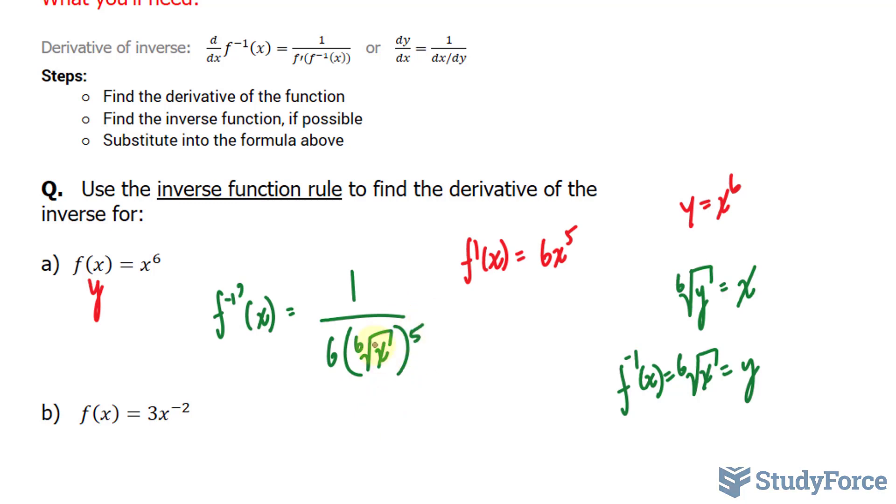Now you can simplify further. The 6th root of x is the same thing as saying x to the power of 1 over 6. And if we have this power raised to a power of 5, we multiply the powers together, giving us 5 over 6. So you can write it as that or you can leave it like this.